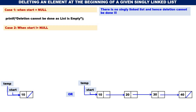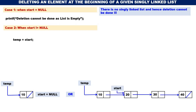First, temp = start — we assign temp to the starting node. Next, to delete the node at the beginning, we have to change the address of start: start should not contain the address of the first node but instead the address of the next node. Therefore, start = start->next. In the first sub-case, start->next is NULL, so start becomes NULL. In the second sub-case, start moves to the node containing 20.